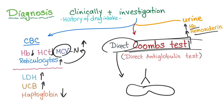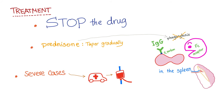Drug-induced immune hemolytic anemia could be either extravascular or intravascular. How to treat it? Look at the name — drug-induced hemolysis — so stop the drug! That's the first step. The drug is causing the problem, you remove the drug. Also, you can give prednisone, which is anti-inflammatory — steroids will prevent this process. Severe cases will need blood transfusion.